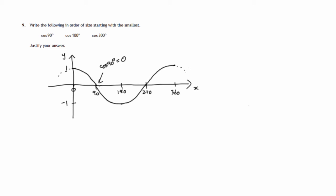The cosine of 100, 100 is just to the right of that. You notice the graph has gone below the x-axis. So this would indicate that the cosine of 100, whatever it is, is going to be less than 0.